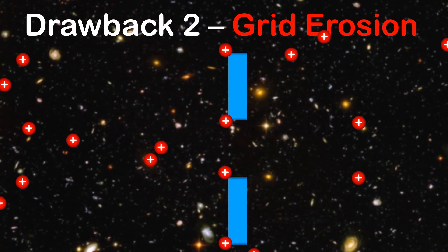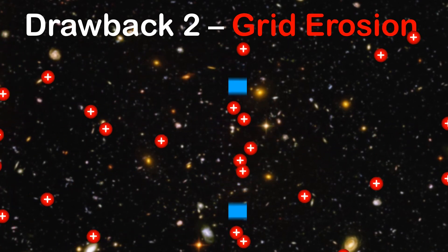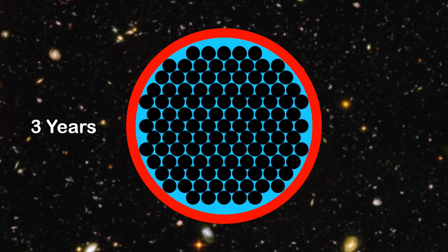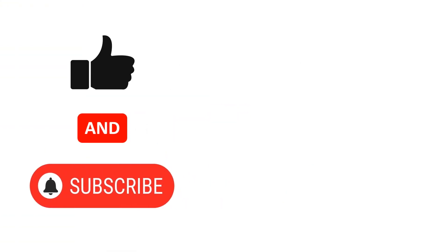The second issue is grid erosion. Even using ion optics, grid erosion is unavoidable, and it limits a gridded ion thruster to about three and a half years of continuous use. But please watch the next video on the Hall Effect thruster to see how these two issues are addressed.